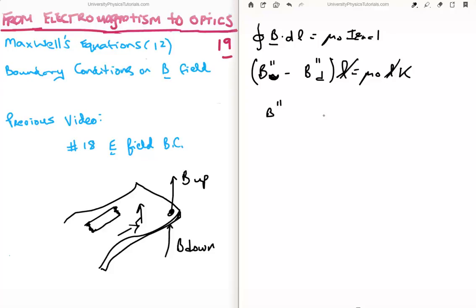We can cancel the lengths, and we find that the tangential magnetic field is in fact discontinuous, and it's discontinuous by an amount mu_0 times K.